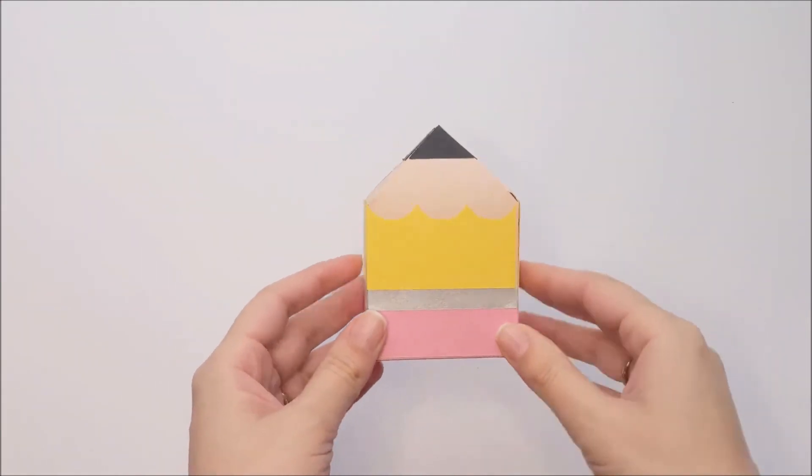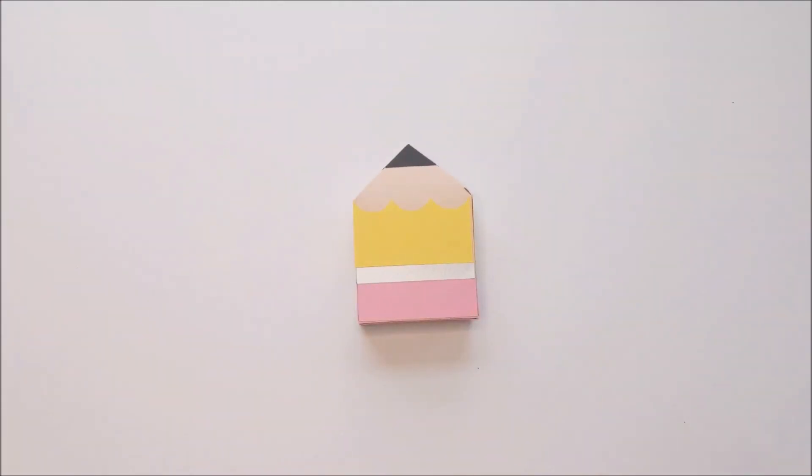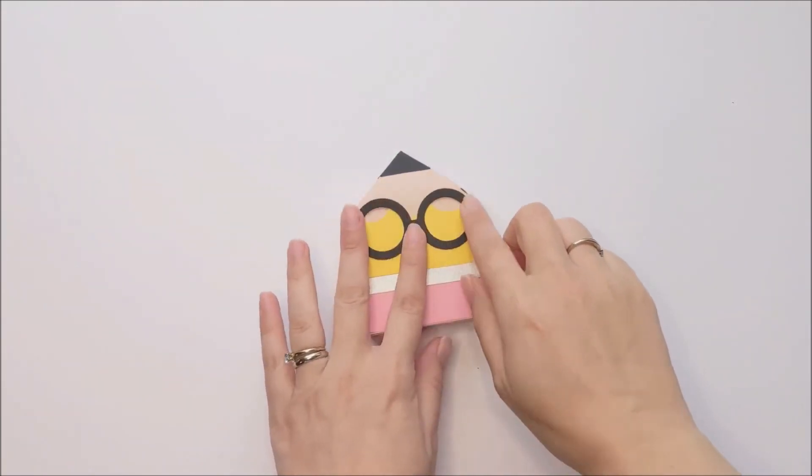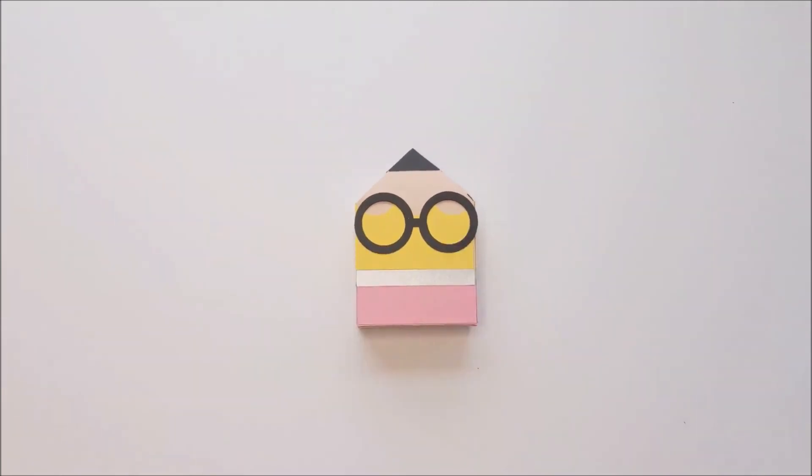Last, if you want, you can add a little face to your box. Next, glue down the glasses first. And then glue down your eyes and mouth.